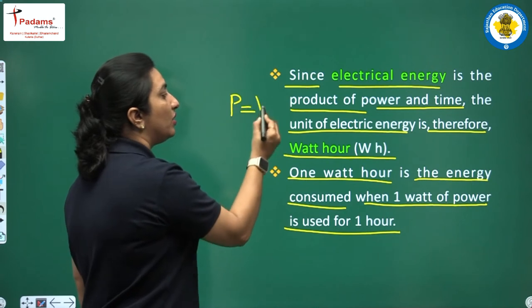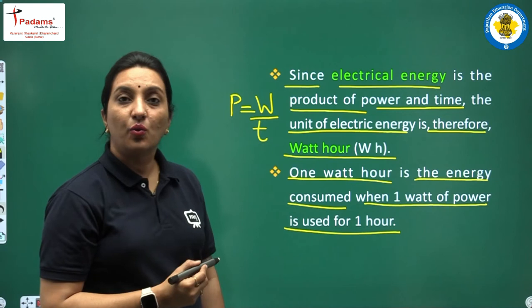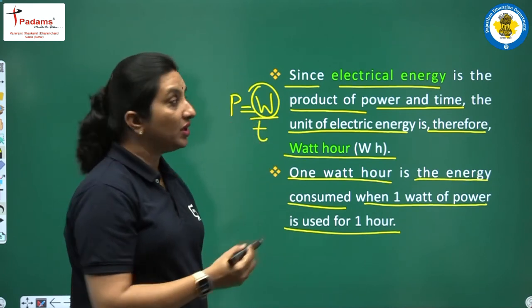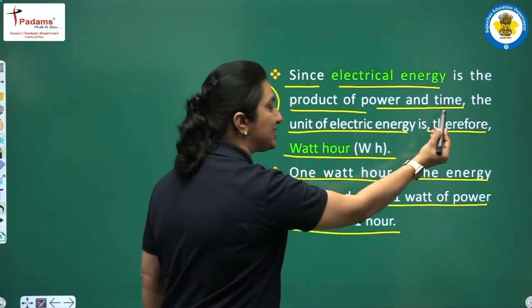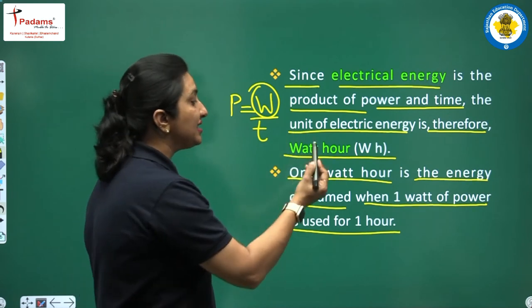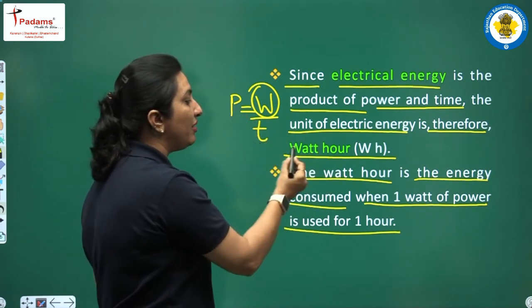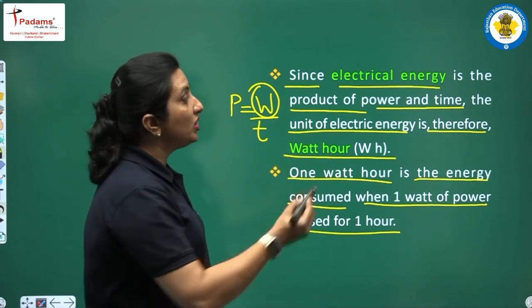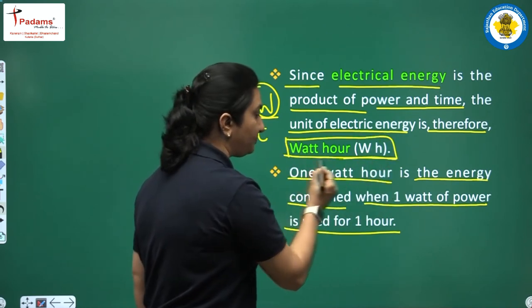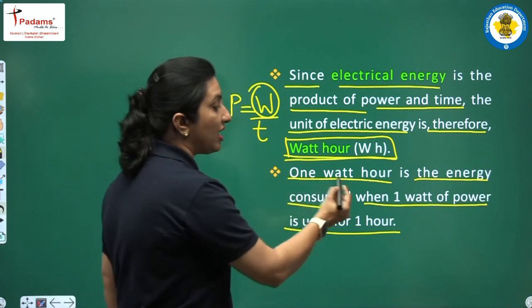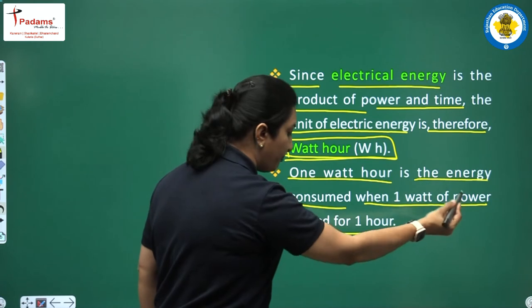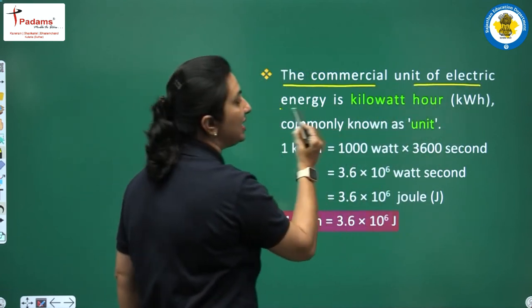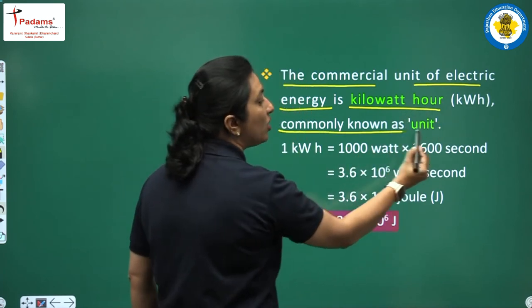Energy equals power multiplied by time, so the unit of electrical energy is watt-hour. 1 watt-hour is the energy consumed when 1 watt of power is used for 1 hour. The commercial unit of electrical energy is the kilowatt-hour, commonly known as 'unit.' In our houses we say 200 units of electricity, meaning 200 kilowatt-hours.